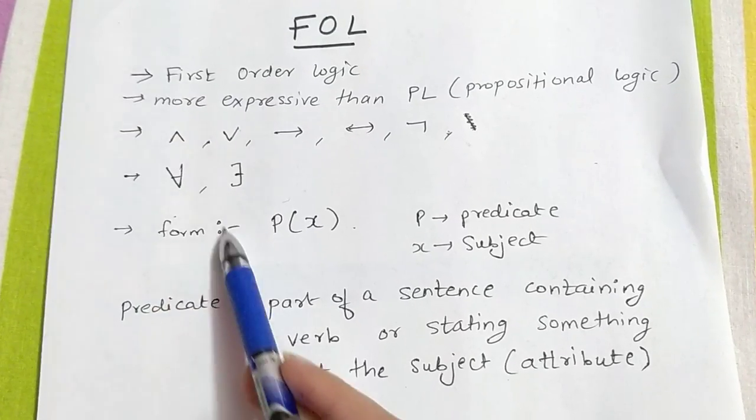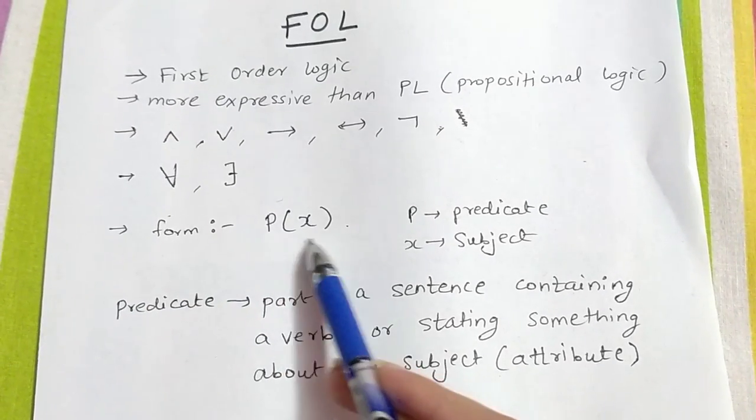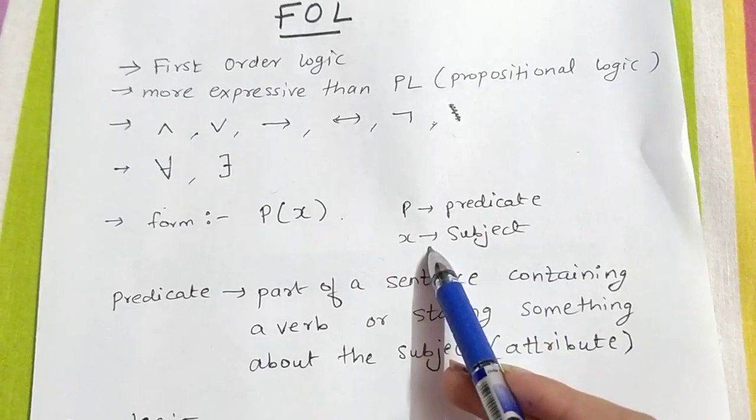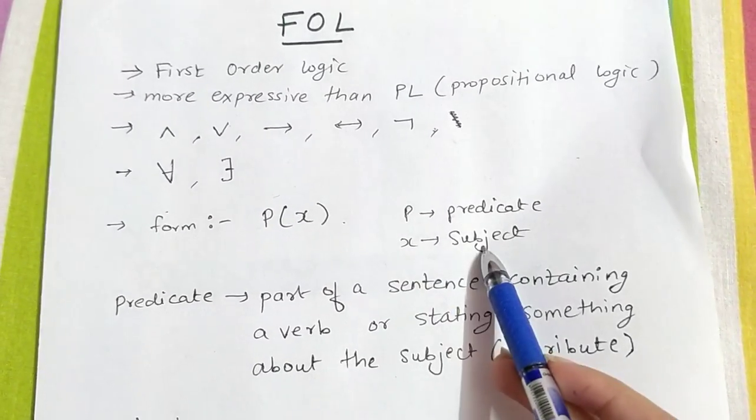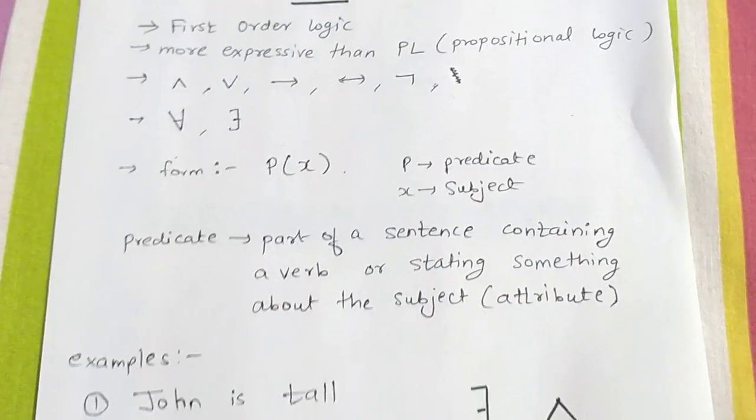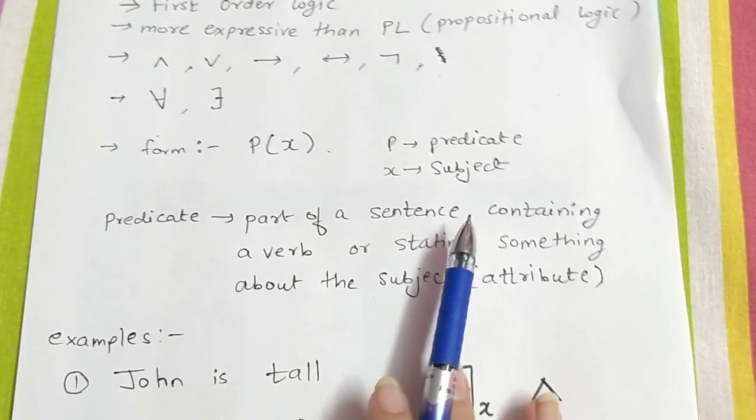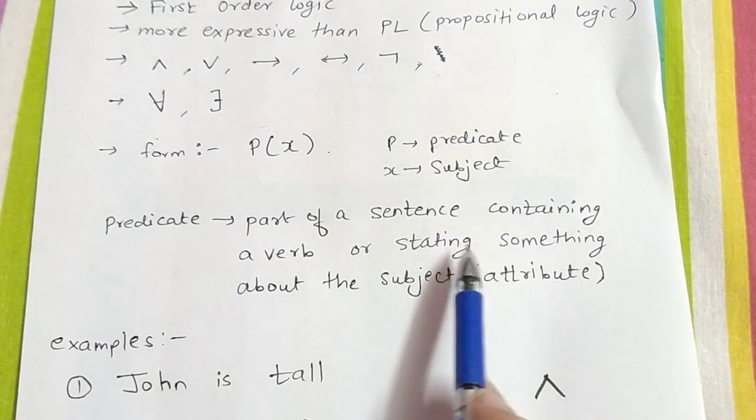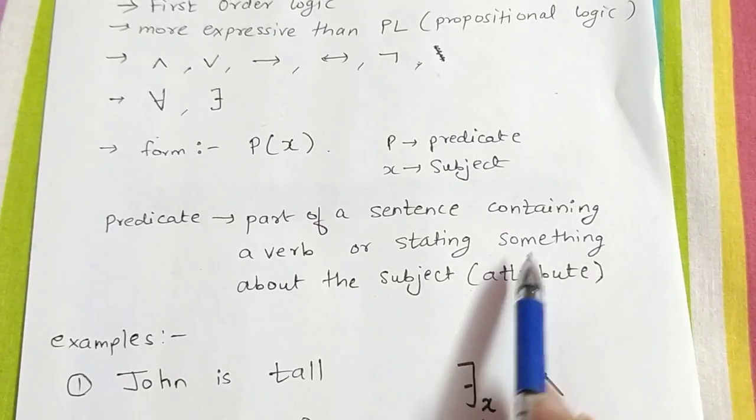FOL is in the form P(X), where P is predicate and X is subject. What is predicate basically? It is part of a sentence containing a verb, or stating something about the subject attribute.